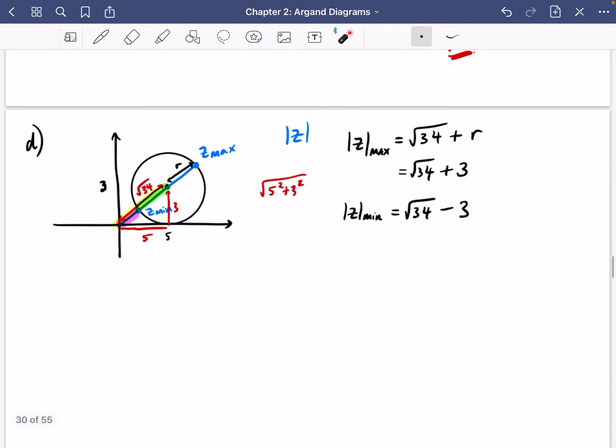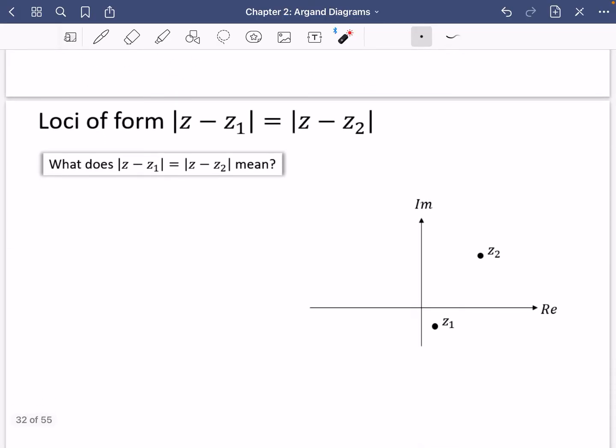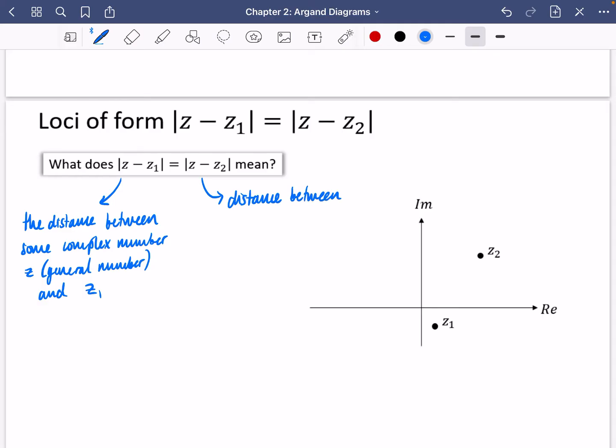So let's draw that into the next part. The left-hand side is saying this is the distance between some complex number z, and this is a general number meaning it can move, and z1. The right side means the distance between z and z2.